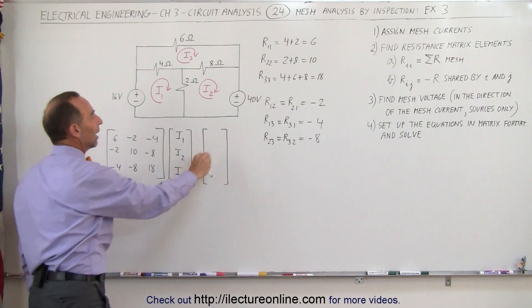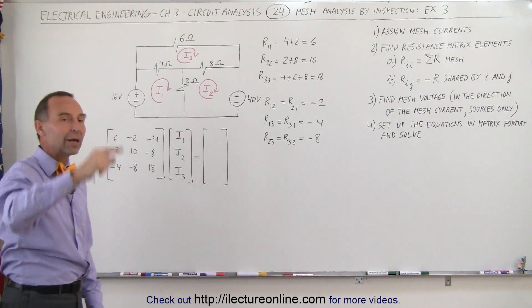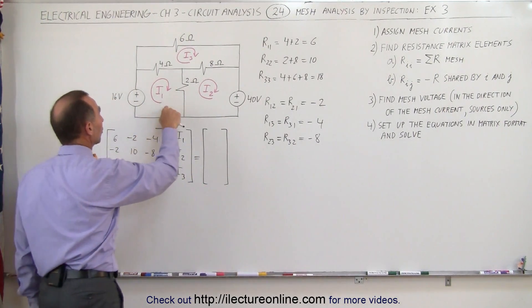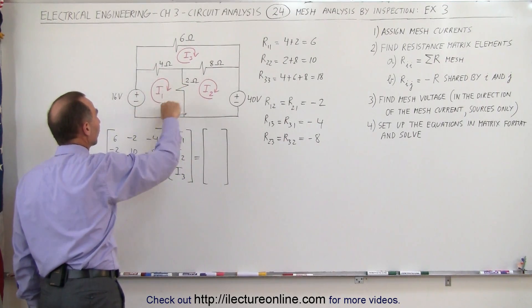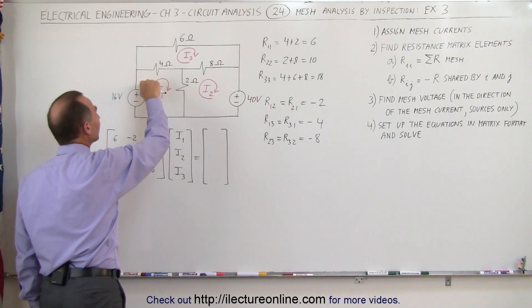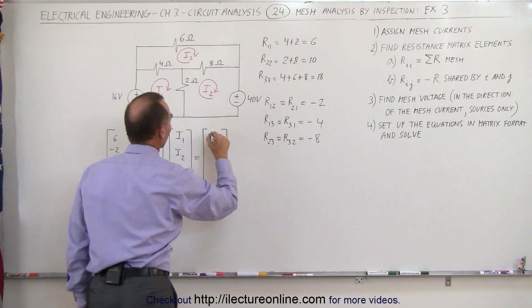Now we have to add up the voltages as we travel around each mesh in the same direction as the current. Notice when we travel around the first mesh, we have a 16 volt rise, no drops. So plus 16 volts.